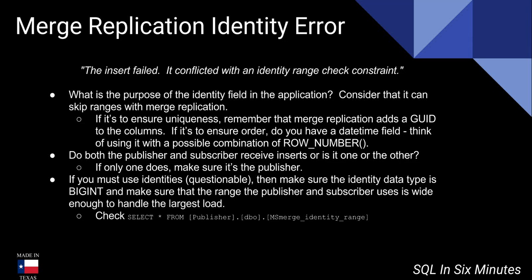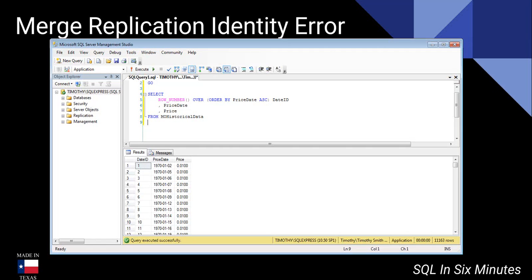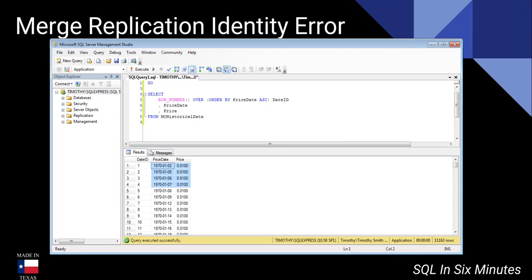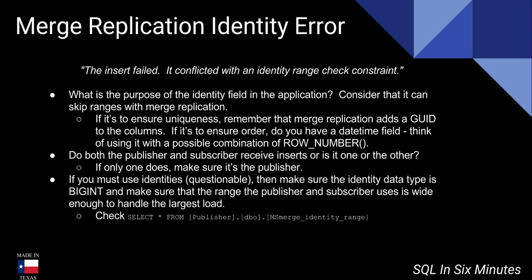If the purpose is to ensure order, is there a datetime field? Because you can use a row number trick with the datetime field. You'll see row number over order by price date ascending — date ID, price date, and price. If it was a datetime field, I could order it that way and come up with the same thing. This is Altria Group's stock. The point is we can use row number to create an ID if we have a datetime field.